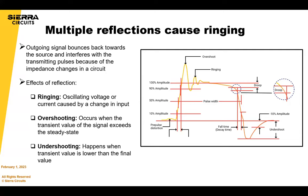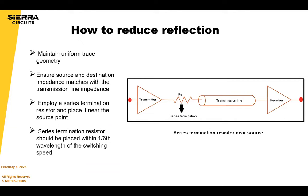The reflected signal travels back until it encounters another change in impedance and gets reflected again, causing oscillating voltage or current — this is called ringing. Overshooting occurs when the transient value of the signal exceeds the steady state; undershooting happens when the transient value is lower than the final value. To reduce reflection: maintain trace uniformity, ensure source and destination impedance matches with transmission line impedance, use a series terminating resistor placed near the source point within one-sixth of a wavelength of the driver's switching speed.